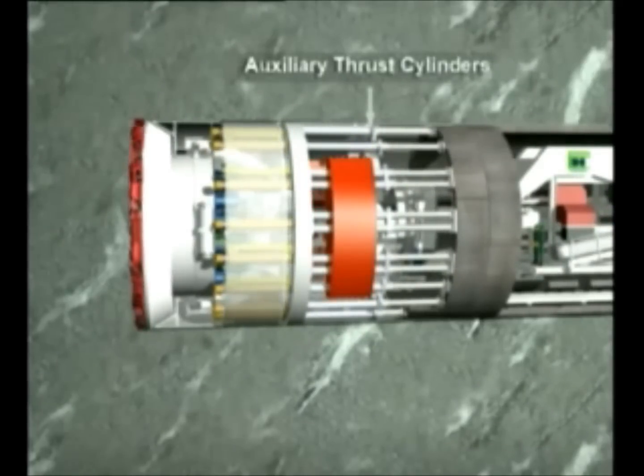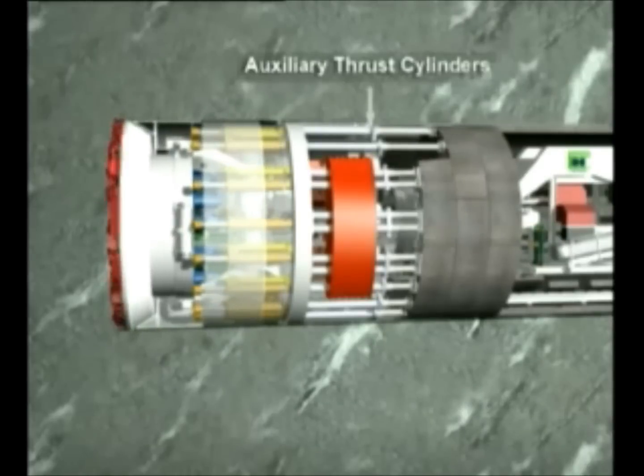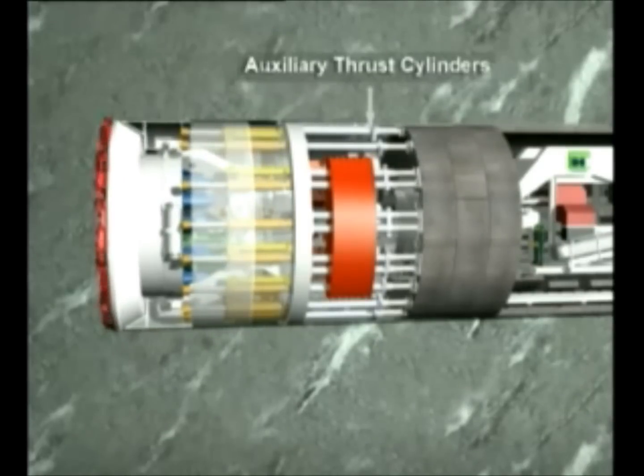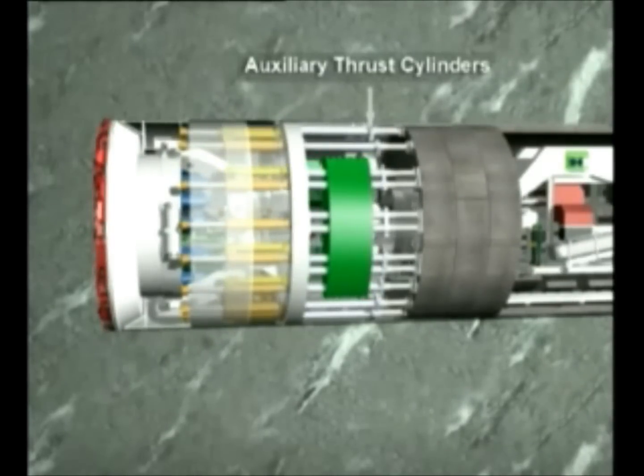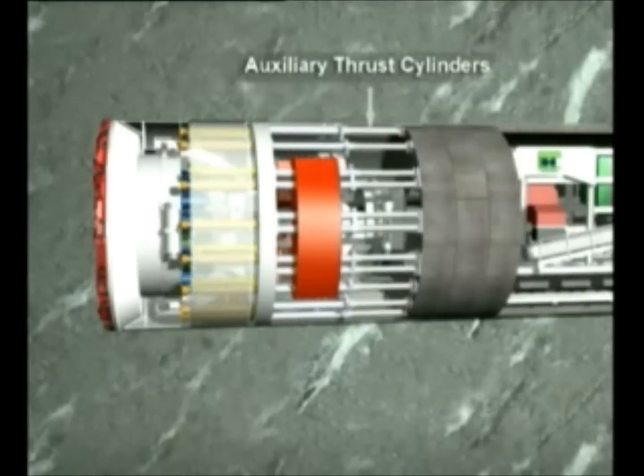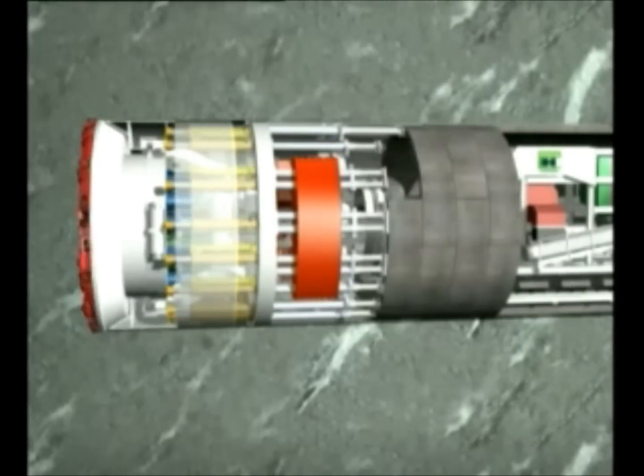Thereby, the auxiliary thrust cylinders only serve for the fixation of the segments. In fact, during the segment installation, as well as during the re-grip cycle, when the rear section of the machine, including the gripper section and the tail skin, is pushed forward.